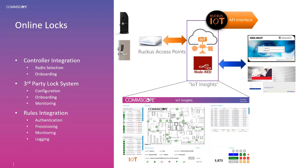On top of that, we have our Insights platform, which communicates using a combination of the API into the IOT controller but also directly into third-party system APIs. The Insights platform communicates both directly to the IOT controller for background management and to other third-party systems, using partner APIs to get real-time updates on connected locks. This allows us to do authentication, provisioning, monitoring, and logging of everything going on with any device connected within our IOT domain.